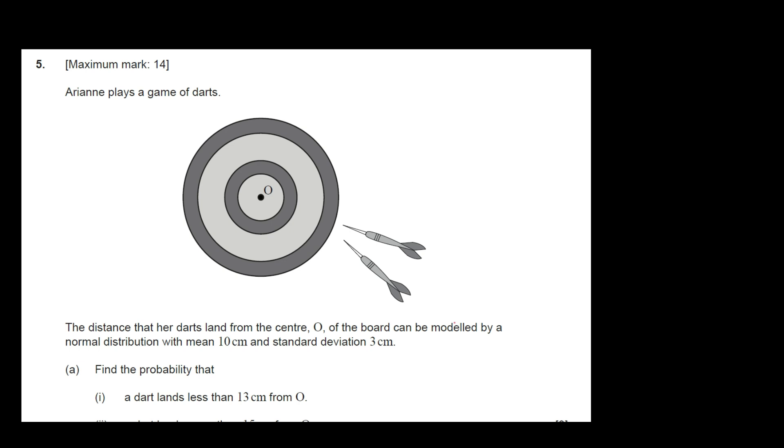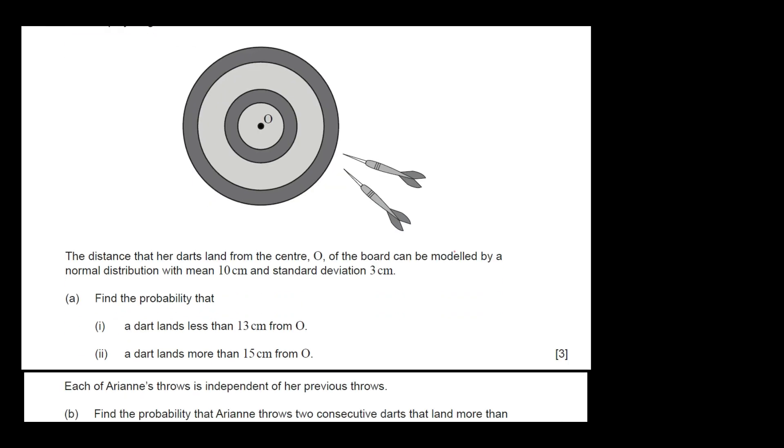So we have the following: Ariane plays a game of darts. The distance that her darts land from the center O of the board can be modeled by a normal distribution with mean 10 cm, standard deviation of 3 cm. Question A: Find the probability that a dart lands less than 13 cm from O.